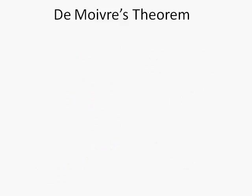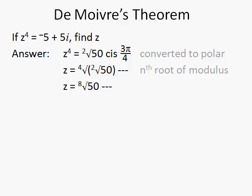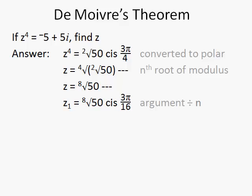Let's do it again with a slightly more complex one. z to the 4 is minus 4 plus 5i and we need to find the possible solutions of z. Convert it to polar form — if you can't do that, look at the video on converting to exact polar forms as we won't cover it here. In this case it's the square root of 50 and the argument is 3π over 4. We take the fourth root of that modulus; the fourth root of a square root is the 8th root, so we have the 8th root of 50. We divide the argument by n: 3π over 4 divided by 4 is 3π over 16. So that's our first solution.